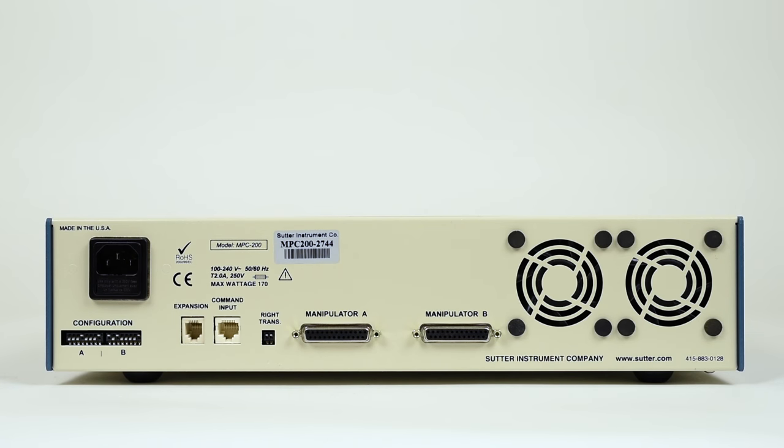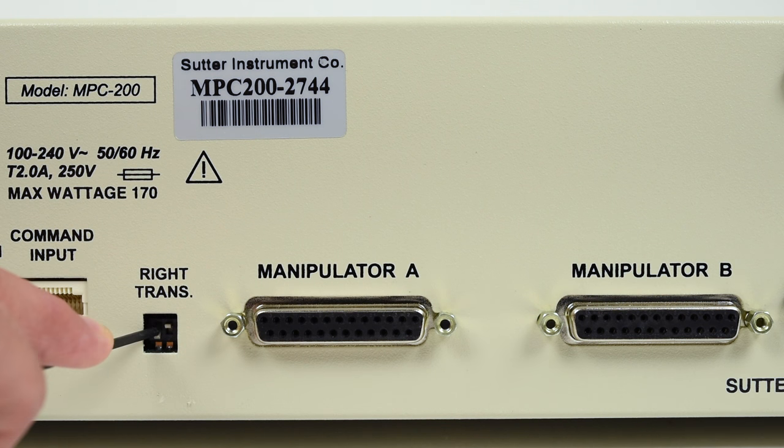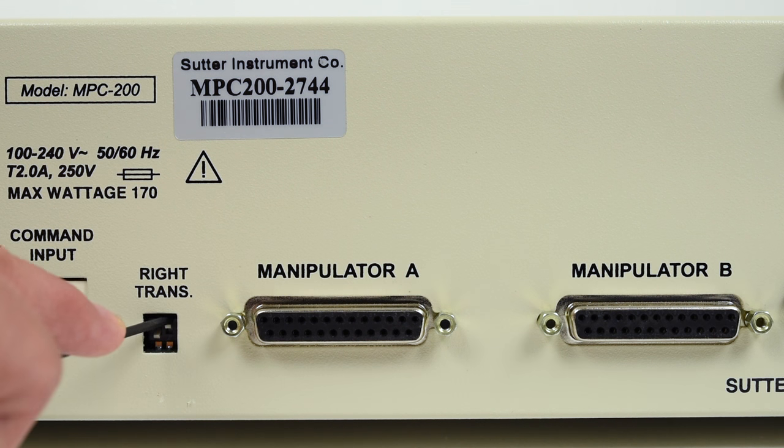On the back of the main controller box, you will find two DIP switches labeled right trans that you need to flip when you are using the right angle adapter. When adding the right angle adapter to a manipulator on port A, change the position of the left side switch. When adding the right angle adapter to a manipulator connected to port B, change the position of the switch on the right.